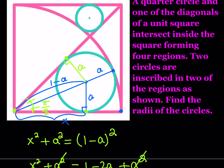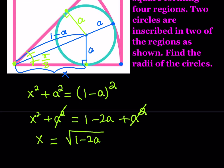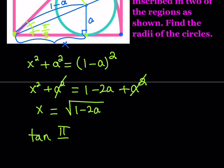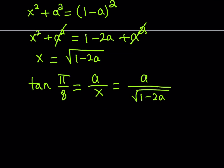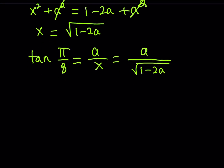Now, how do we associate that with the lengths? Here's where we use trigonometry. We can write tangent(π/8) = a/x. But we were able to express x in terms of a, so we can write it as a / √(1 − 2a). This is an expression in a, so a is unknown, but I do know tangent(π/8). It's √2 − 1. Let me show a really cool method: I'm going to draw an isosceles right triangle.